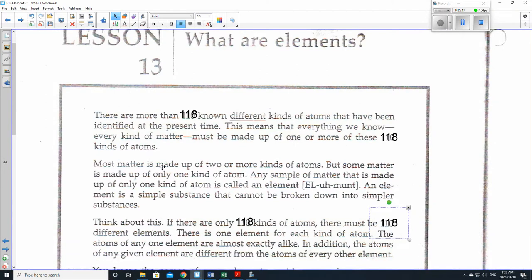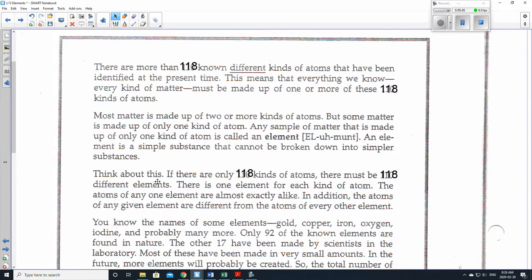So most matter is made up of two or more kinds of atoms, but some matter is made up of only one kind of atom. Any sample of matter that is made up of only one kind of atom is called an element. So say after me, element. An element is a simple substance that cannot be broken down into simpler substances. Think about this. If there are only 118 kinds of atoms, there must be 118 different elements. There is one element for each kind of atom. The atoms of any one element are almost exactly alike. In addition, the atoms of any given element are different from the atoms of every other element.